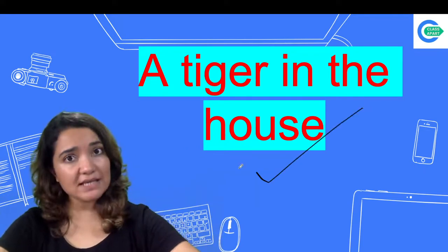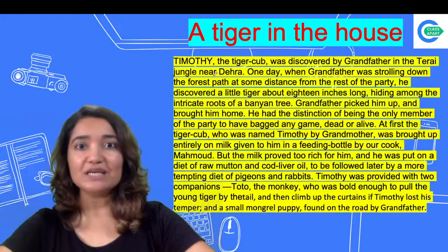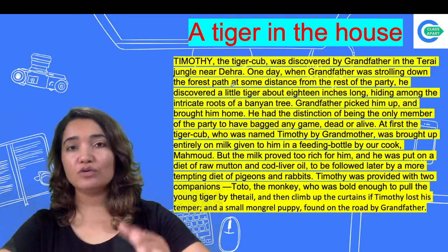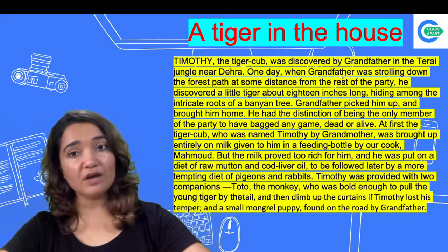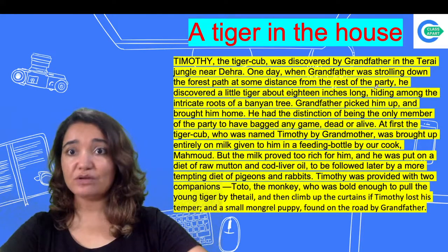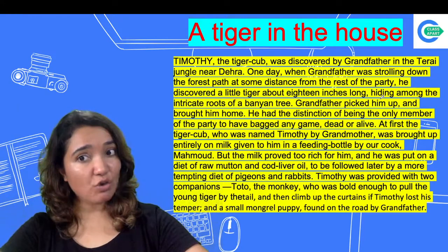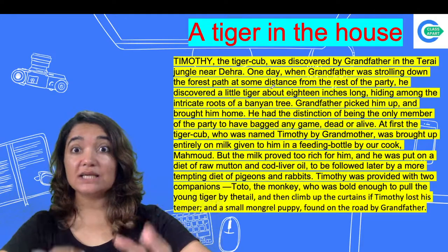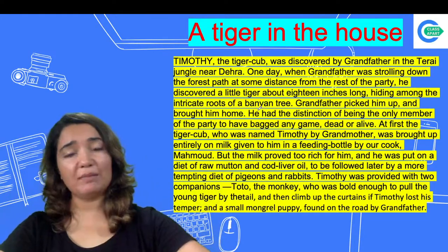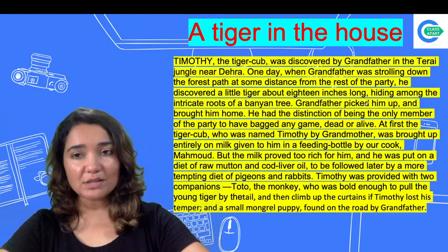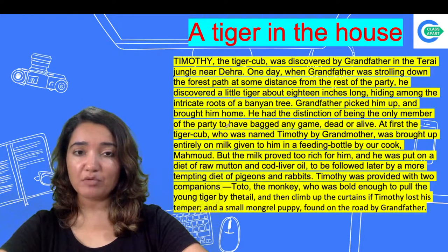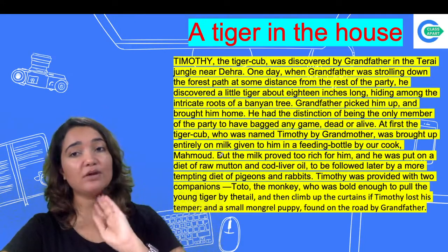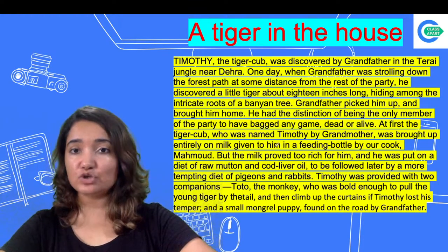Let's see what happened in 'A Tiger in the House.' Timothy the tiger cub was discovered by Grandfather in the Tehri jungle near Tehri. One day, when Grandfather was strolling down the forest path, he discovered a little tiger about 18 inches long, hiding among the intricate — very complex — roots of a banyan tree. Grandfather picked him up and brought him home. The tiger cub was named Timothy by the Grandmother, and at first was brought up on milk given to him in a feeding bottle.